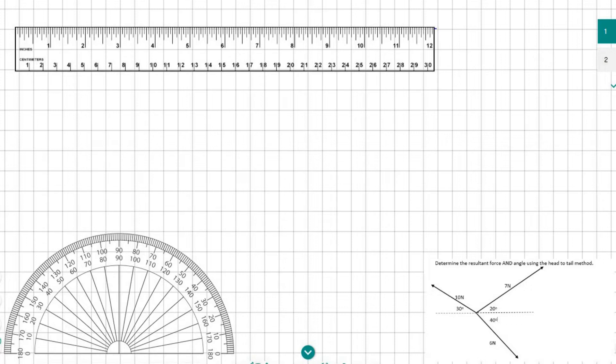So we need to have our starting position. I'm going to start over here. Now I need to look at these numbers: 7 newtons, 10 newtons and 6 newtons. So a scale of 1 to 1 will be sufficient. So I'm going to say scale at the top here is going to be 1 centimeter will represent 1 newton. You need to show that to the teacher.